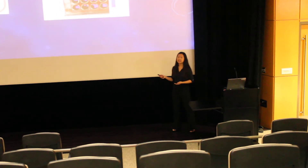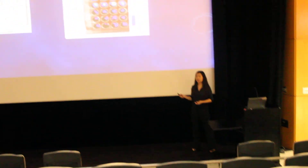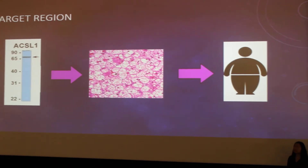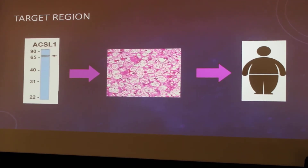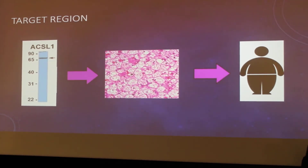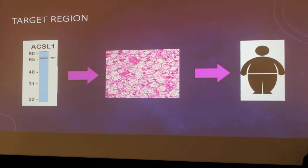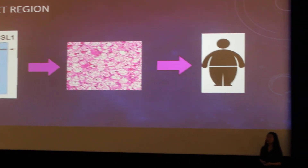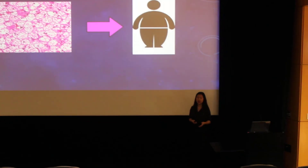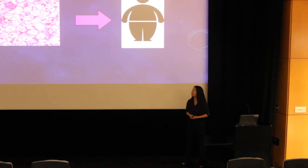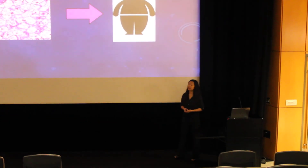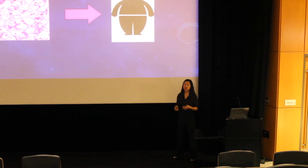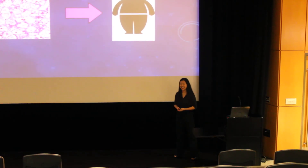Here is an example of results from the luciferase assay. The light intensity directly correlates with how much a gene is being expressed. Once we identify the specific target region of ACSL1 that is important for its expression, we can better understand how brown adipose tissue is differentiated. This can lead to scientific breakthroughs in understanding how obesity functions on a molecular genetics level. Thank you.